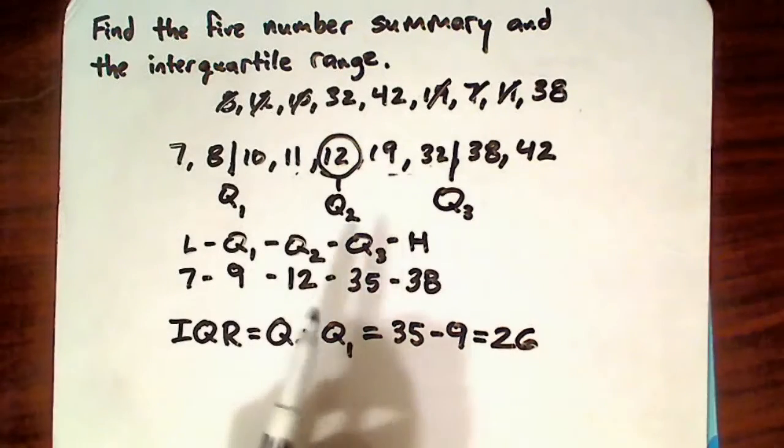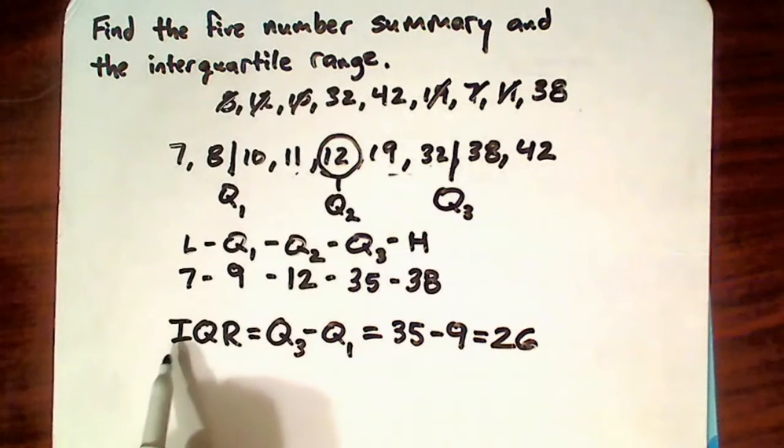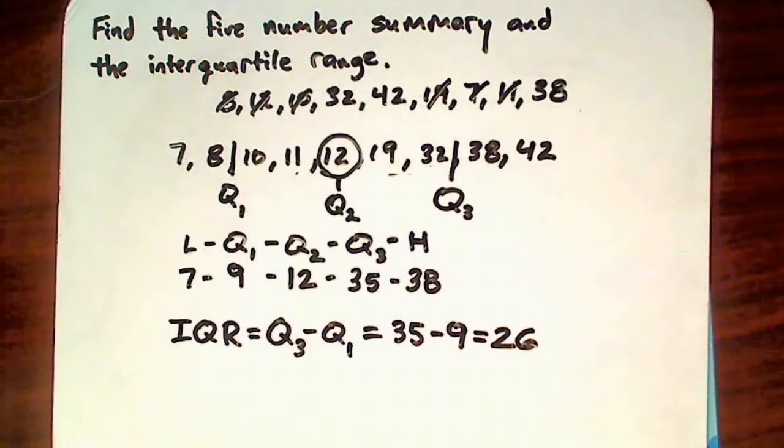And so that's how you find the five-number summary and the interquartile range. And that's it.